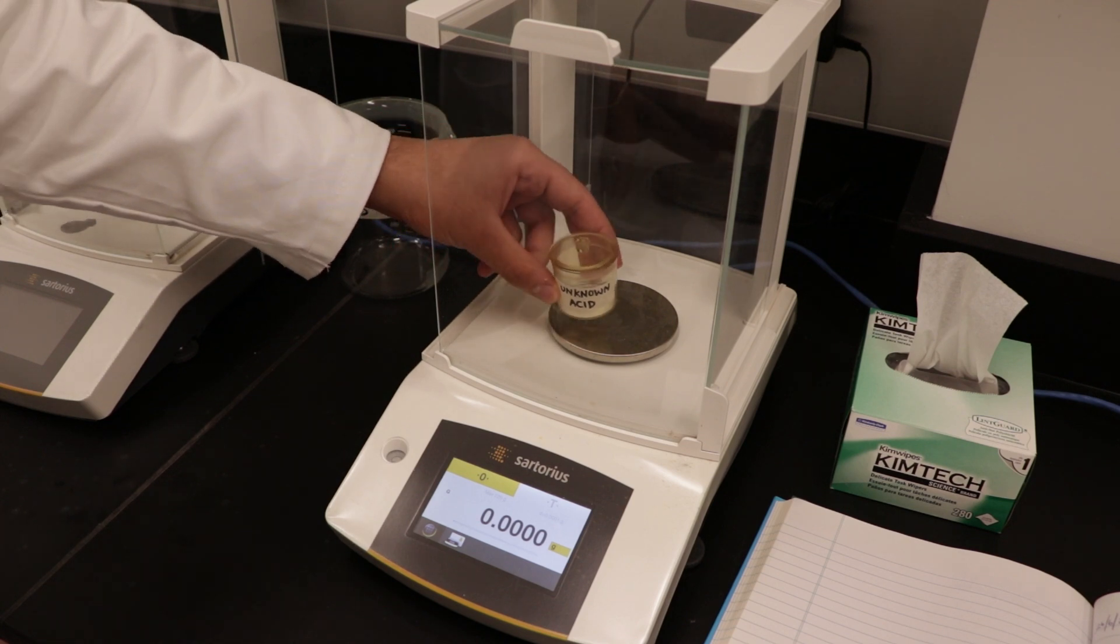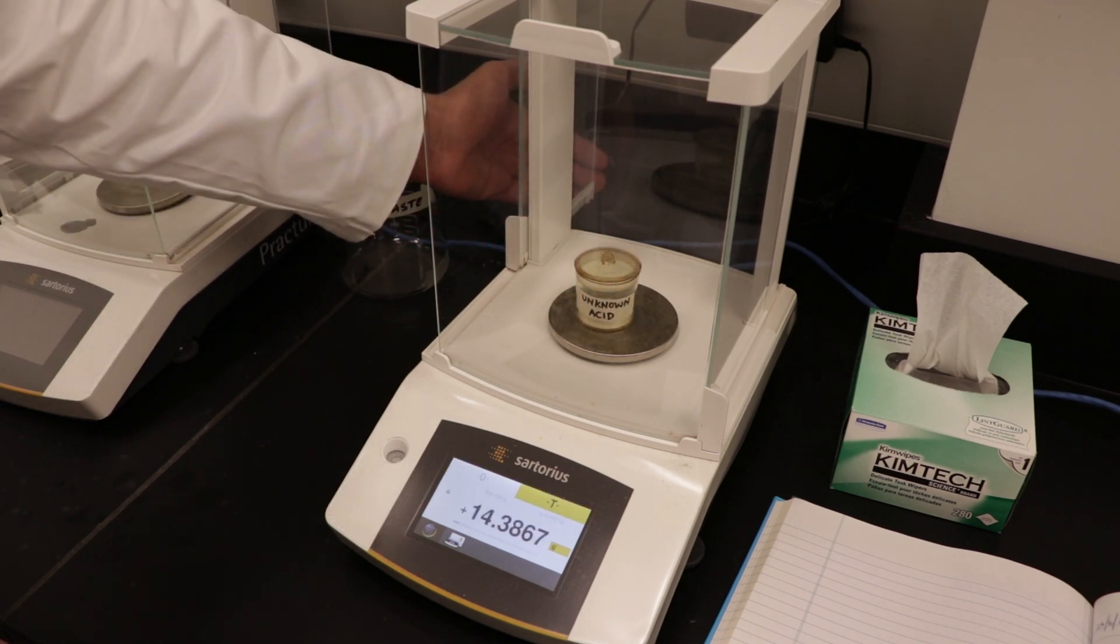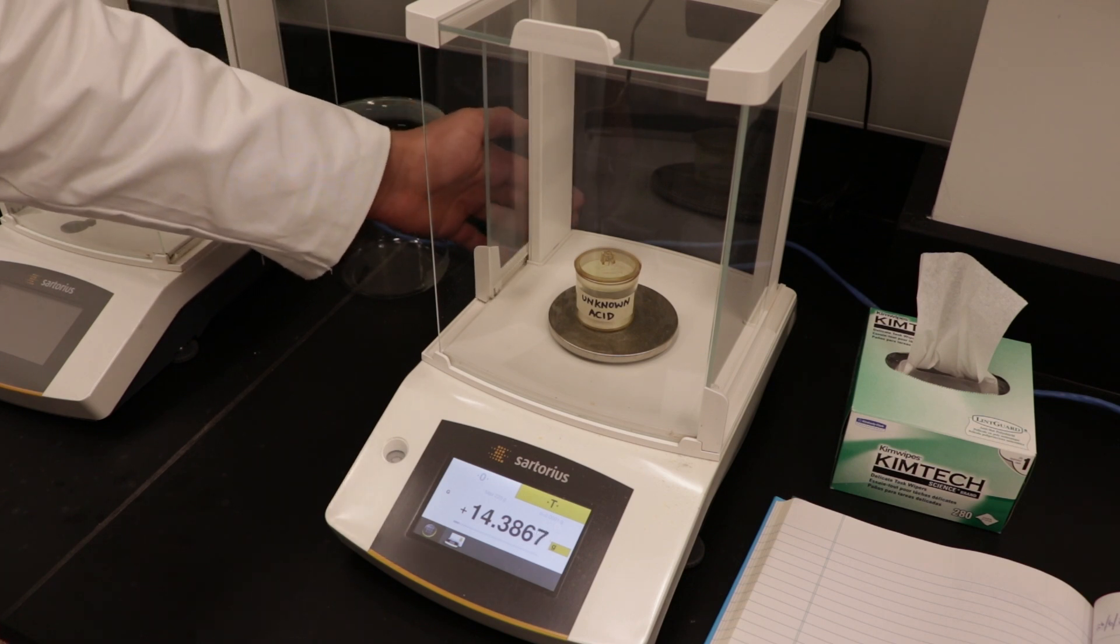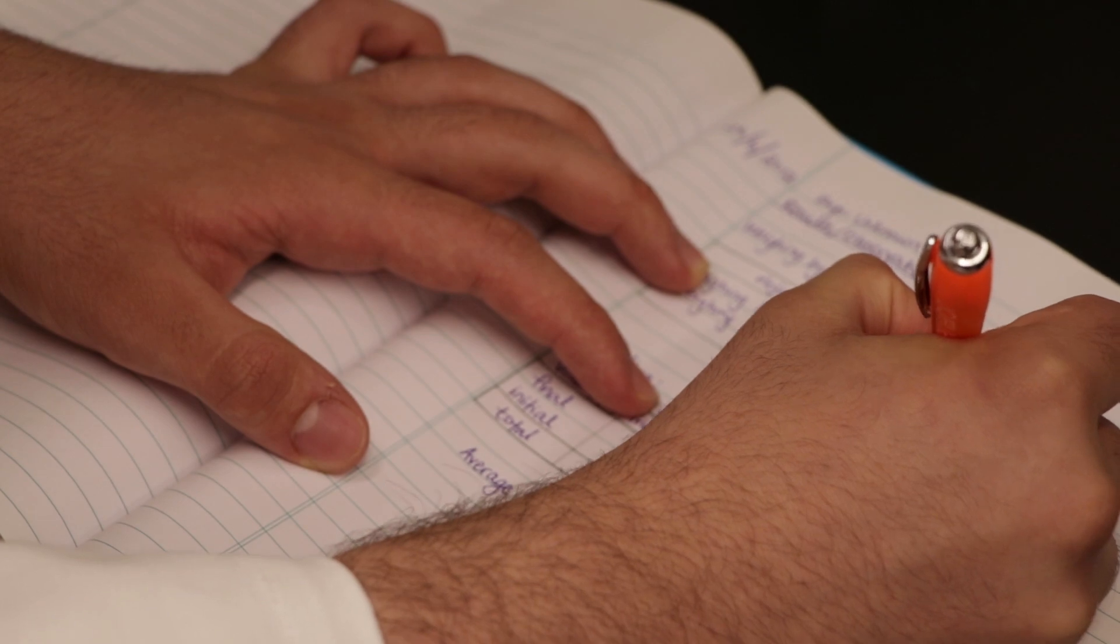Carefully place your weighing bottle with the lid on inside and close the doors. Allow the reading to stabilize before recording it in your lab notebook. Remember to record the weight to four decimal places.